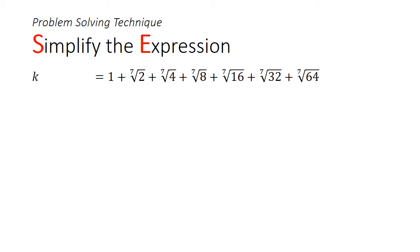So the approach here is very similar to question number 1. What we need to do is start by looking for the common ratio. By expressing every term as a power of 2, we can see that k is equal to 2 to the power of 0 plus 2 to the power of 1 over 7 plus 2 to the power of 2 over 7, all the way to 2 to the power of 6 over 7. Let's call this equation number 1.